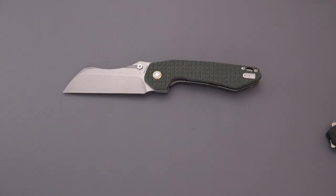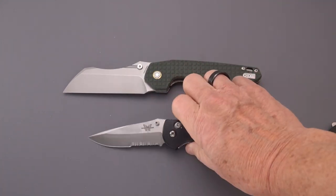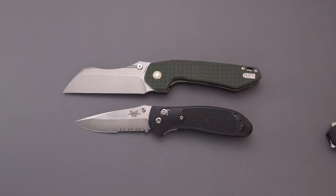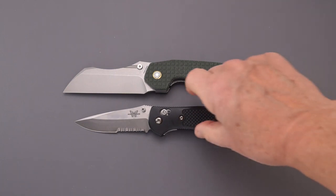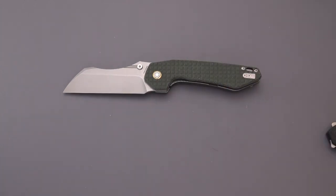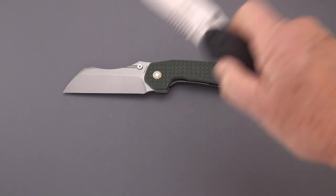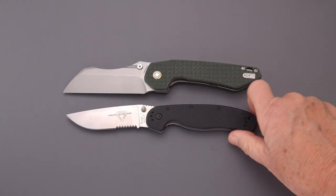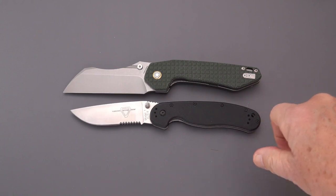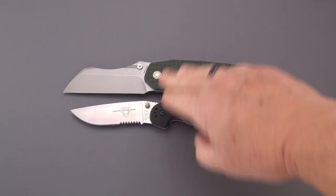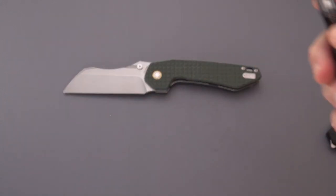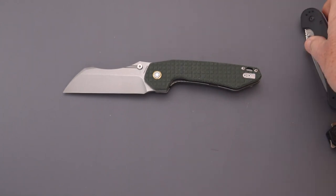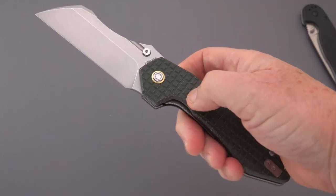What if we put it up next to some standard fare here? Griptilian by Benchmade and RAT 1 by Ontario. And even the RAT 1—not as long, definitely not as tall. This is a large and I would say useful big blade from Vasteed. Excellent, excellent job.